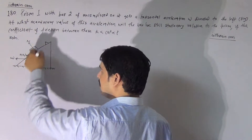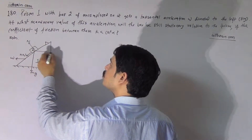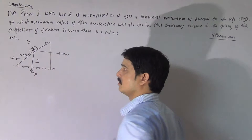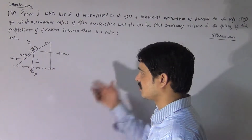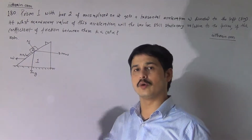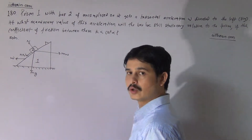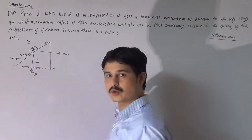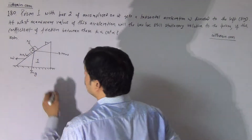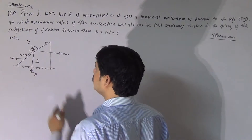The forces acting on the bar are N, KN, and Mg. Additionally, there is a pseudo force since our observer is placed on the prism, and the prism is moving with acceleration W. Our observer is also moving with acceleration W, so the opposite direction gives the pseudo force, because the observer is in a non-inertial frame and the block experiences pseudo-force accordingly.